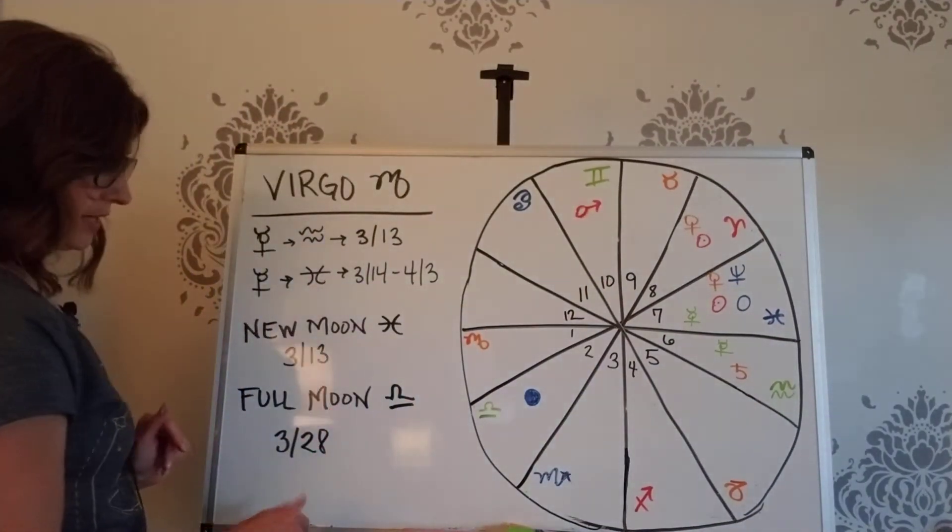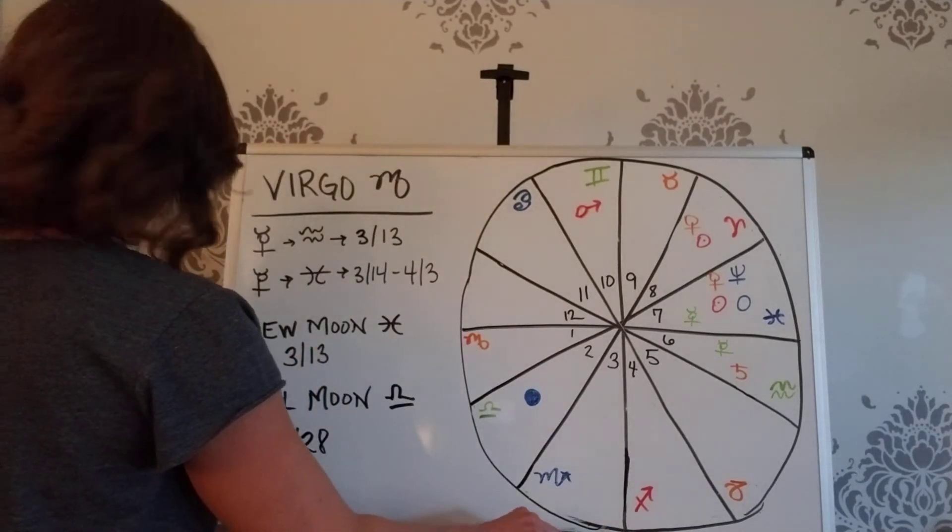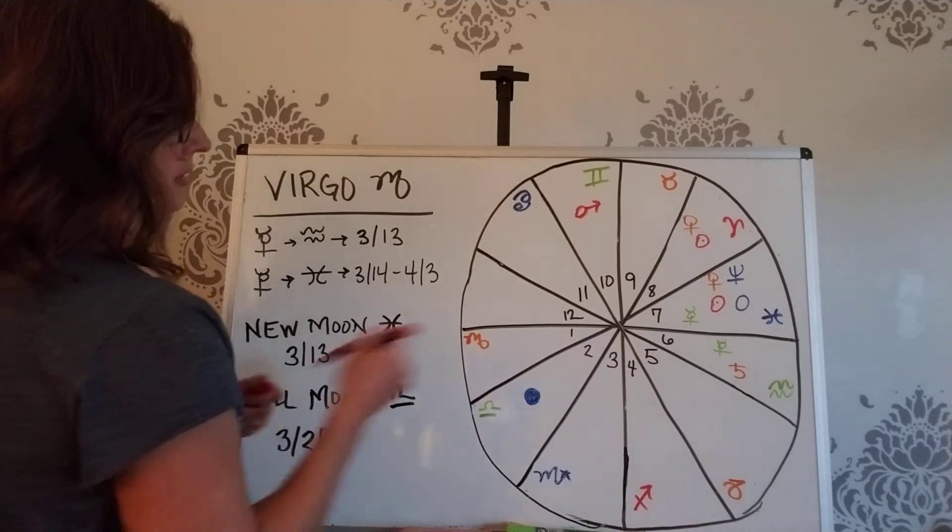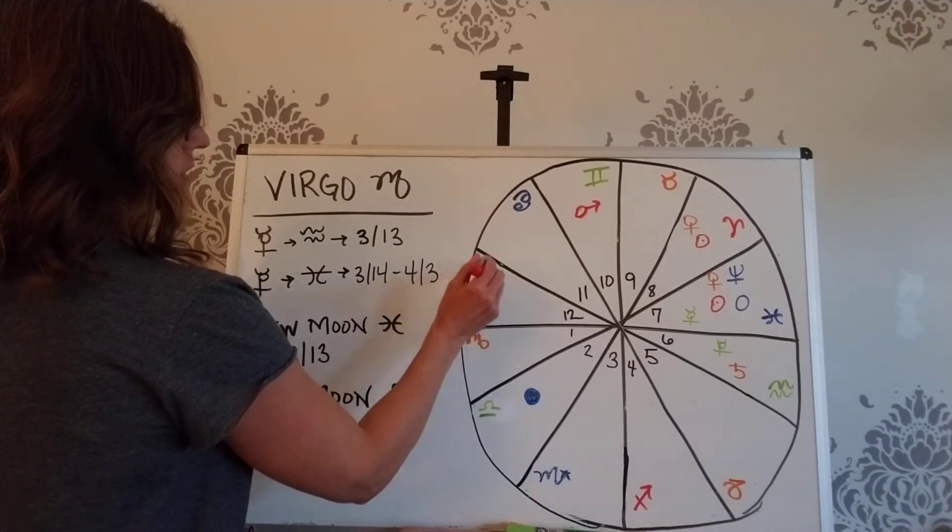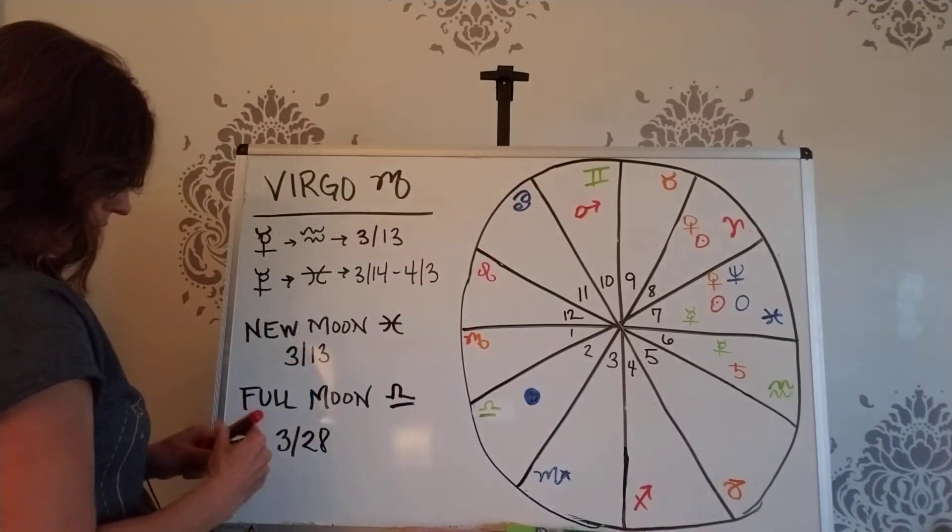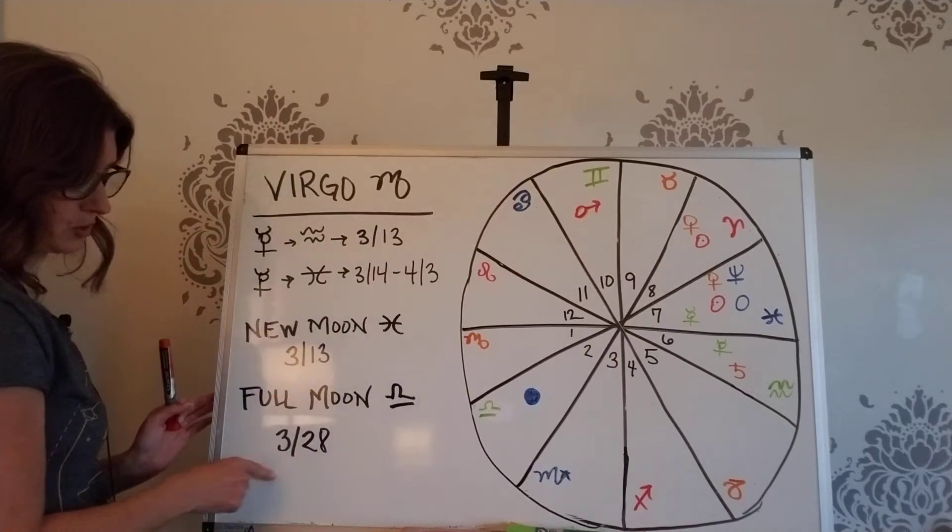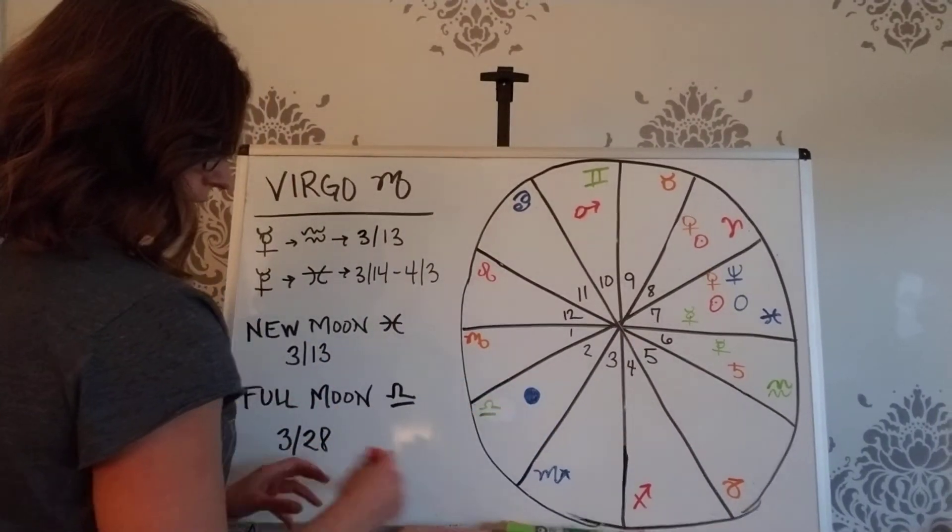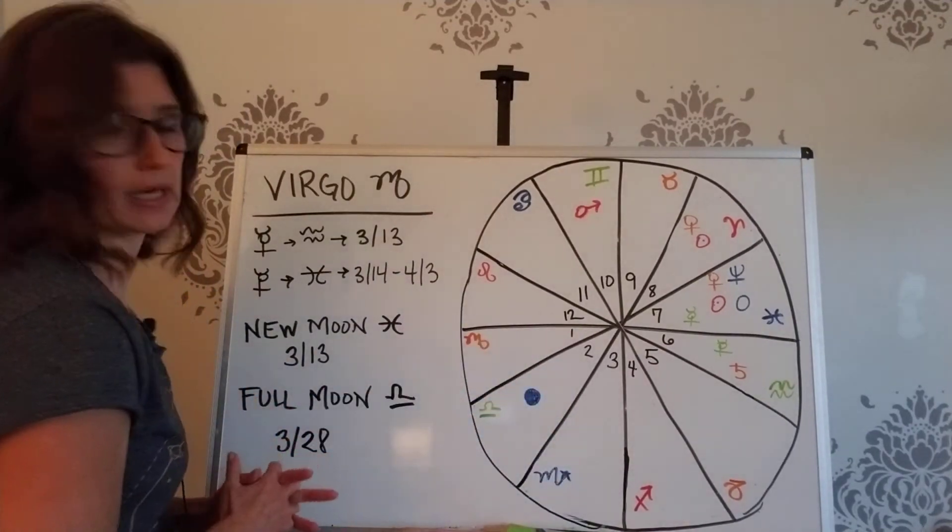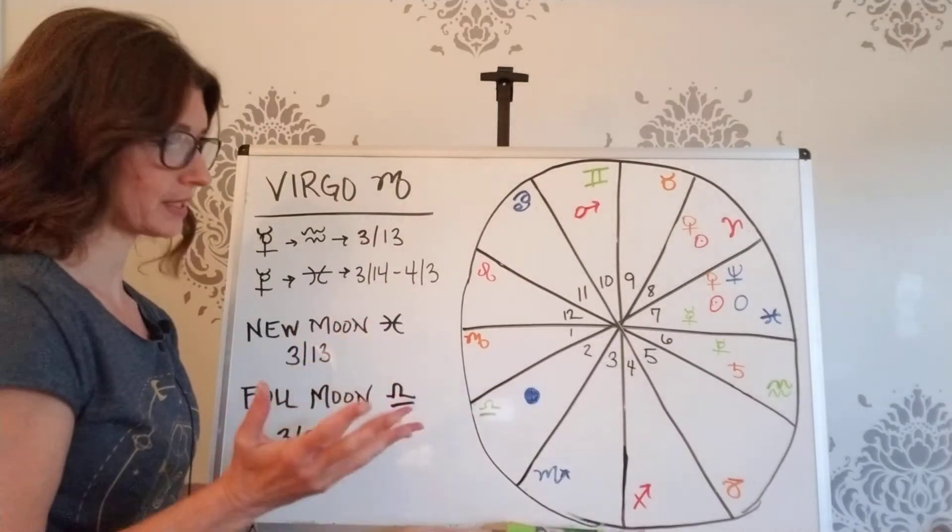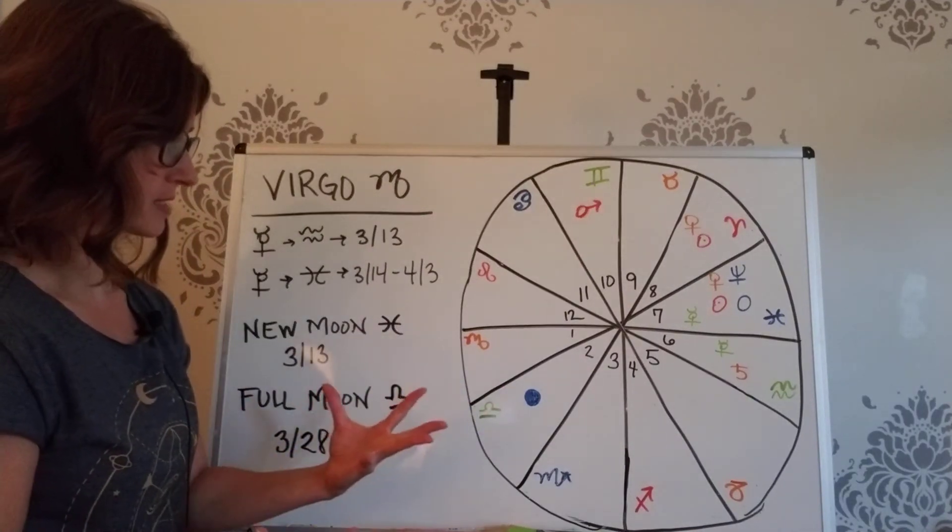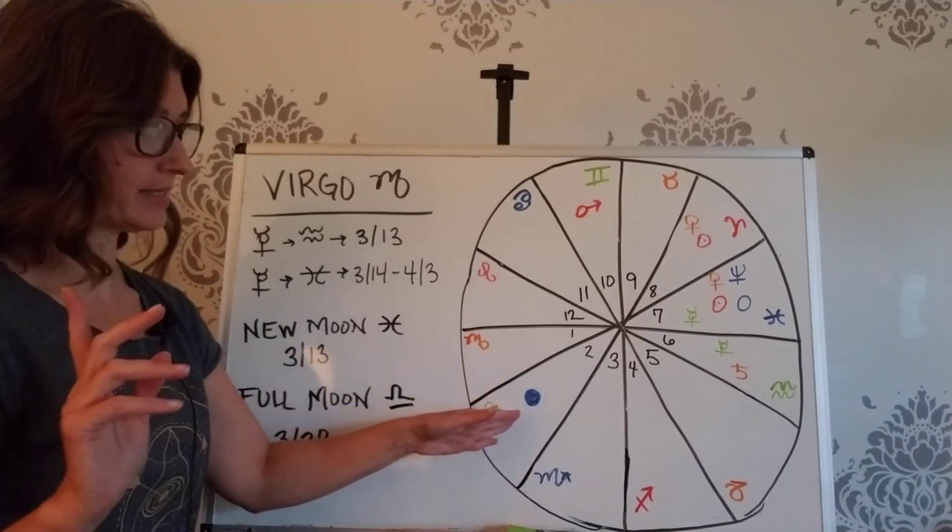And then we have a full moon on the Leo, I gotta put you here. Sorry, Leo. Okay. And then the full moon we have on the 28th, there's something ending here.